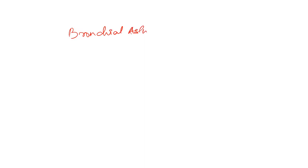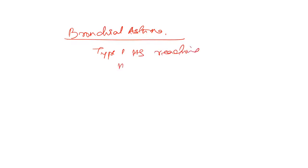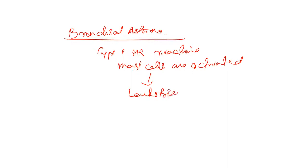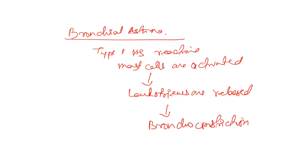Now we will be talking about bronchial asthma. Bronchial asthma is a type 1 hypersensitivity reaction. Mast cells are activated, leukotrienes are released, and because of that there is bronchoconstriction. So what we want is bronchodilation. The treatment plan for bronchial asthma is generally bronchodilators.